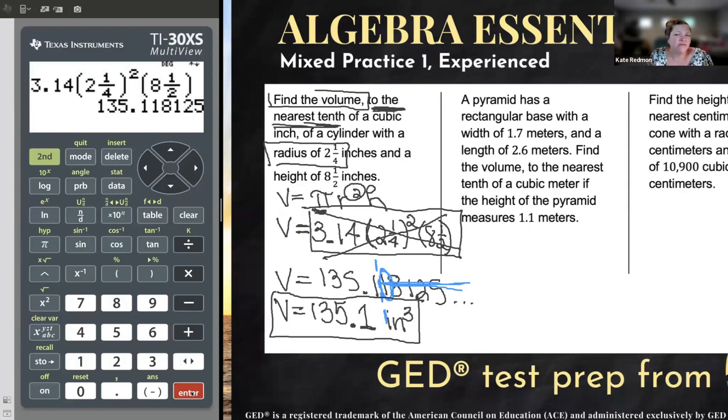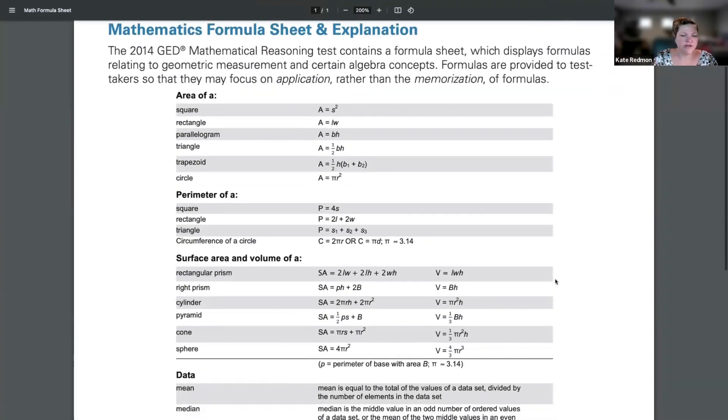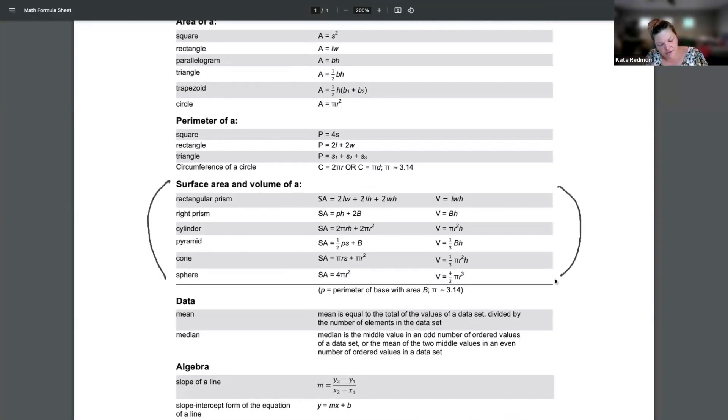The next one, we're still finding volume, but it's not quite so straightforward. A pyramid has a rectangular base with a width of 1.7 meters and a length of 2.6 meters. Find the volume to the nearest tenth of a cubic meter if the height of the pyramid measures 1.1 meters. So once again, it's volume. And volume of what? Volume of a pyramid. But take a look what your formula sheet has to say about volume of a pyramid. Once again, I'm going to scroll down here to my surface area and volume formulas. There is my pyramid, and I'm looking for volume, so I'll pick up the V formula.